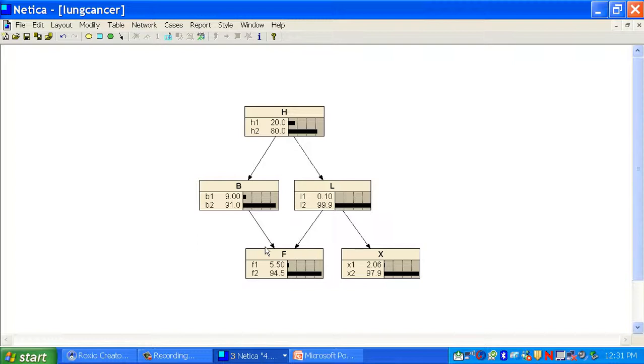This network is our lung cancer example drawn or created in the package NETICA. This is the prior probability of smoking history. It's 0.2, not smoking.